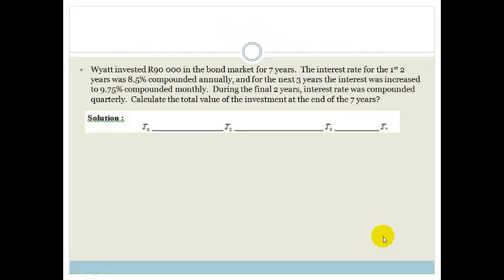Wyatt invested R90,000 in the bond market for 7 years. The interest rate for the first 2 years was 8.5% compounded annually. For the next 3 years, the interest was increased to 9.75% compounded monthly. And during the final 2 years, the interest was compounded quarterly. Calculate the total value of the investment at the end of the 7 years. To help us, they've provided a timeline that we're going to use.